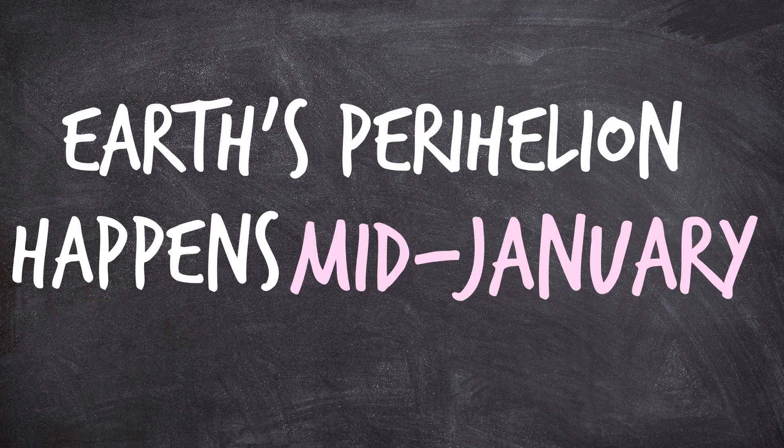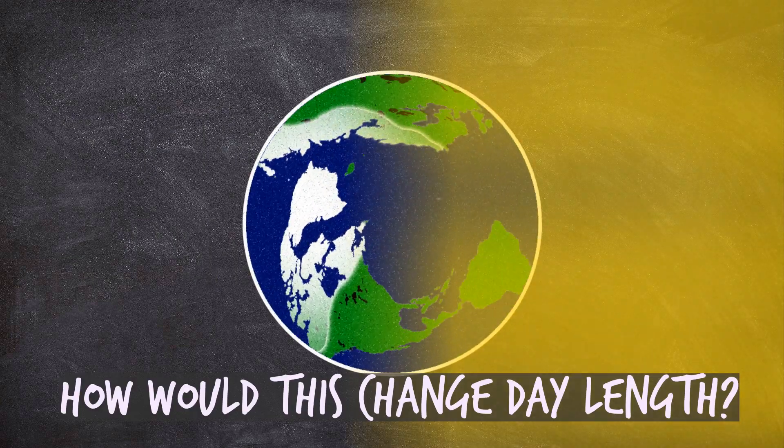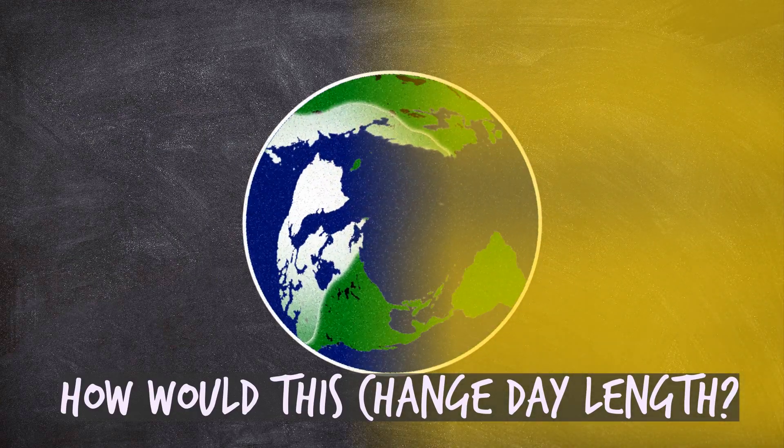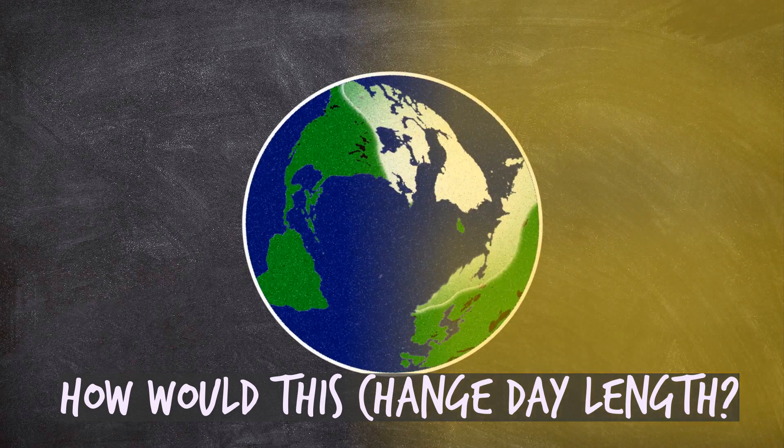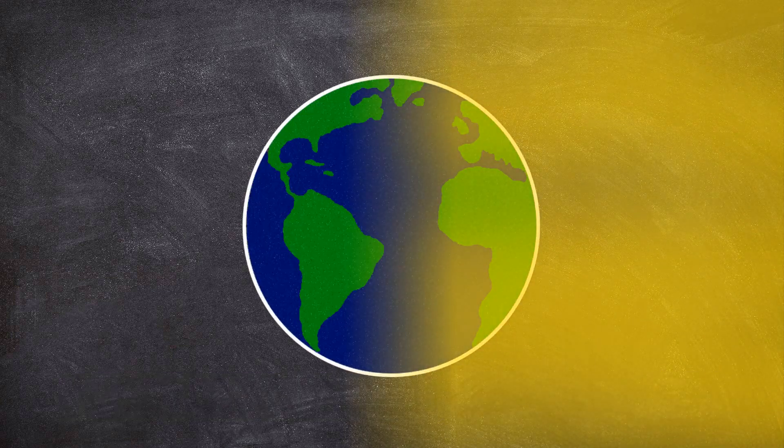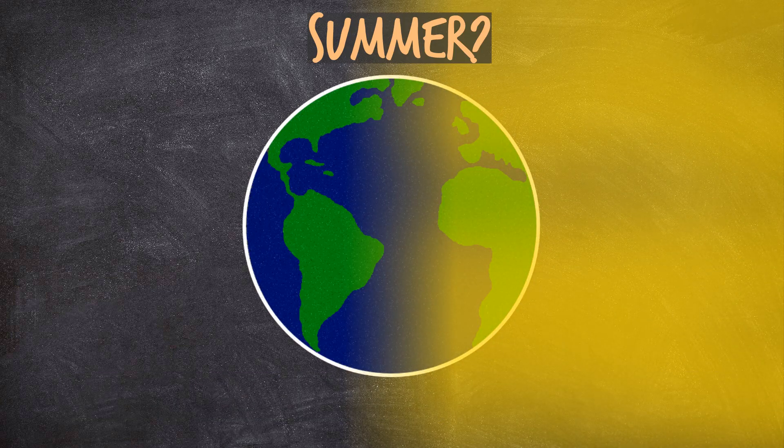For one, perihelion actually happens around January, which is actually winter in the northern hemisphere. But also how would that cause the length of days to change? And the entire planet does not experience summer at the same time. When it's summer in one hemisphere, it's winter in the other.